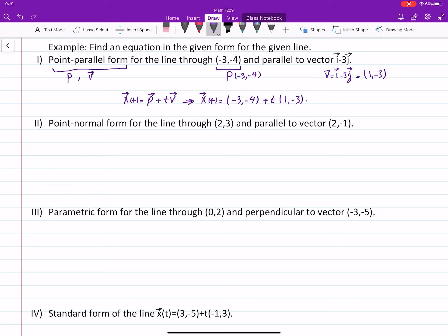The second part asks for point normal form. Means what? Means we are looking for a point, and we are looking for a normal vector. Let's see which one is given. The point, yes, it is given, 2, 3. But instead of normal vector, remember, normal vector is perpendicular to the line. But here, what is given is parallel vector.